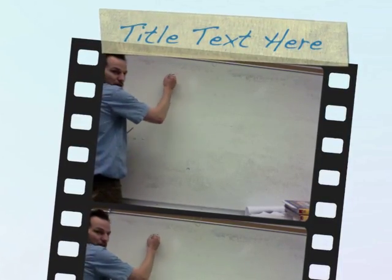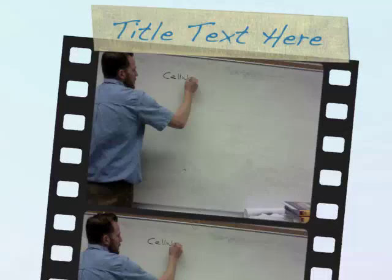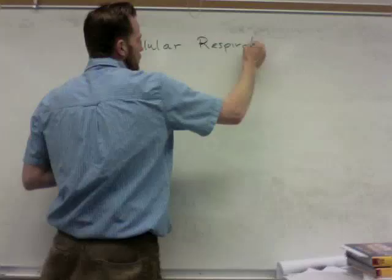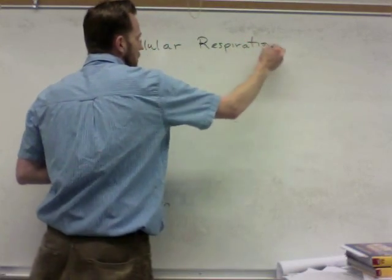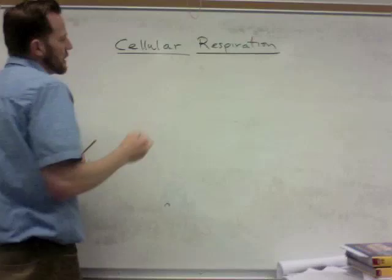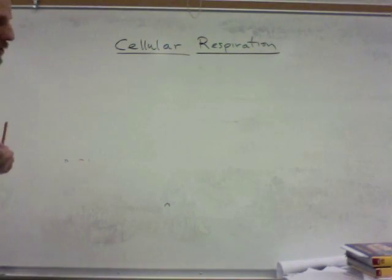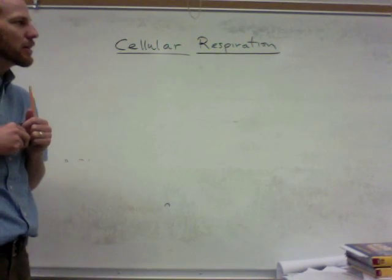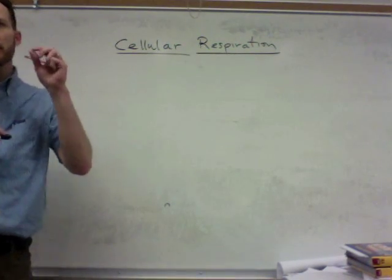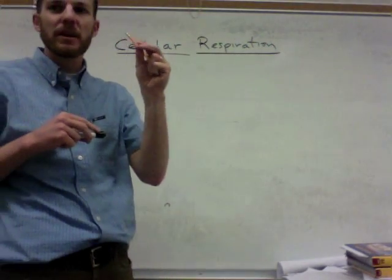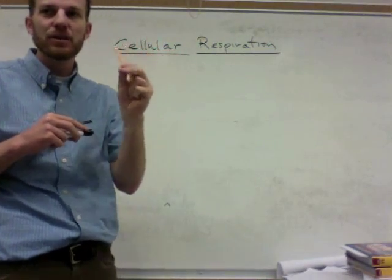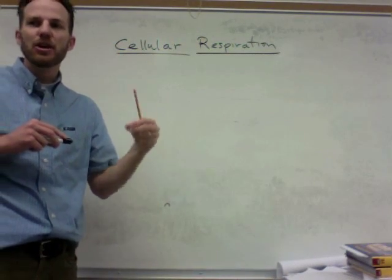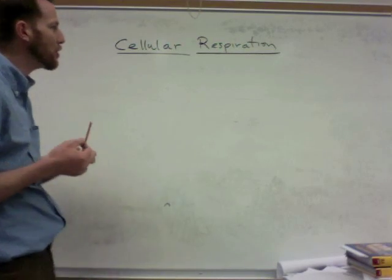This is cellular respiration. Cellular respiration is the process of the mitochondria in animal and plant cells where energy stored in a form like glucose, a chemical energy, is turned into another form of chemical energy called ATP, which can be used by all cells.